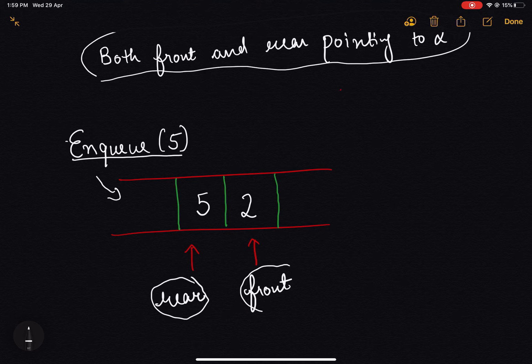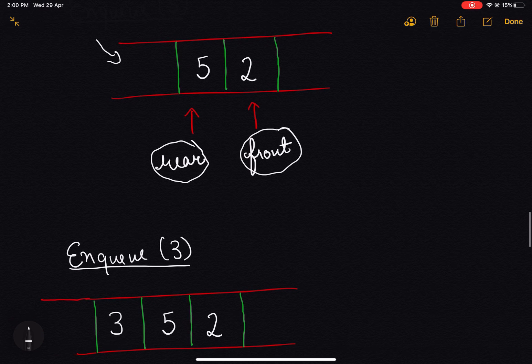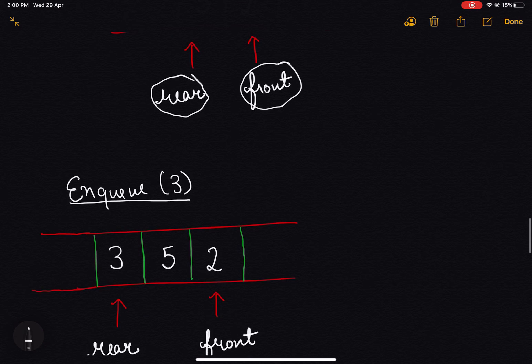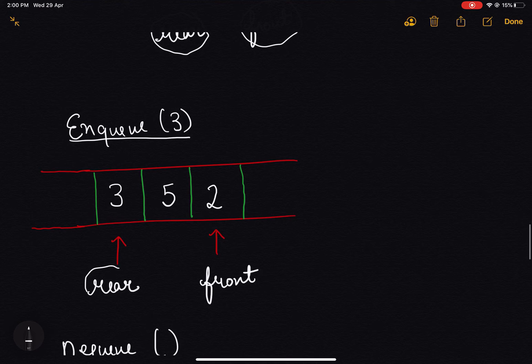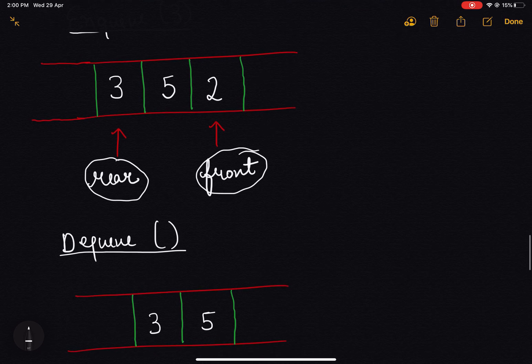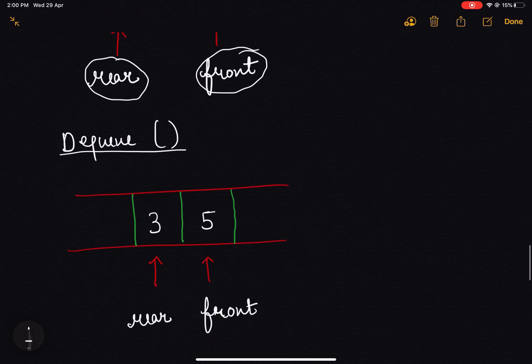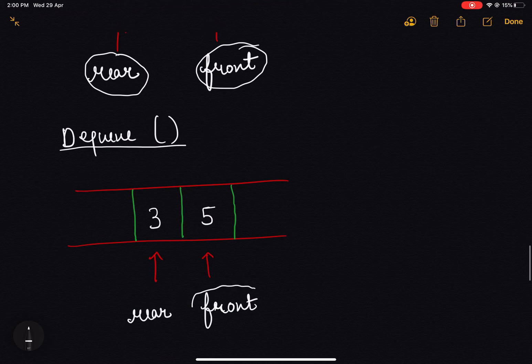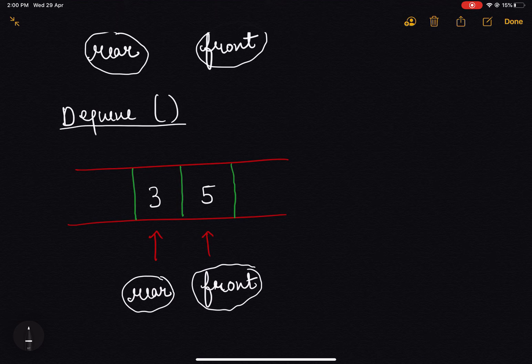Now let's say somebody asks to insert 3 into the queue. The snapshot of the queue will be something like this where the rear is pointing here and front is pointing here. Now let's say somebody asks us to dequeue an element, that means delete an element. As we know, deletion occurs from the other end, from this opening of the container. So then our front gets updated to 5 and the rear will be 3.